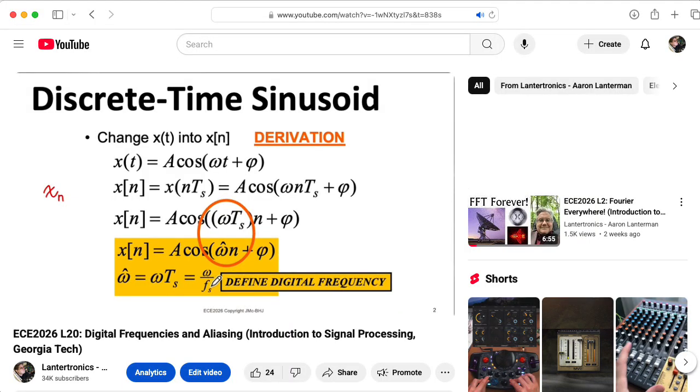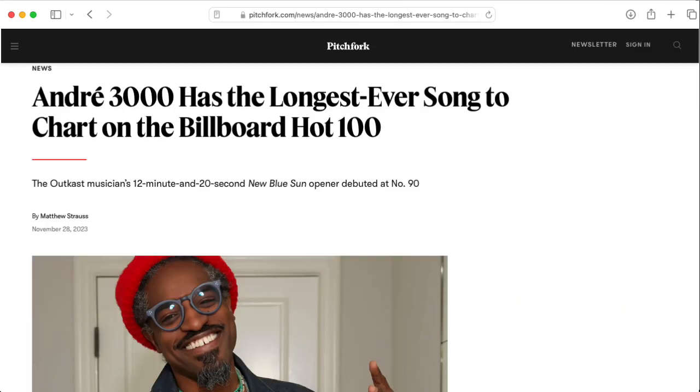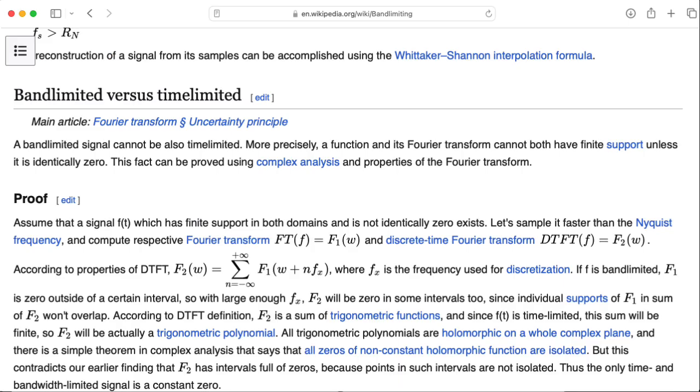And remember in the last couple of lectures we always talked about sinusoids that were conceptually happening for all time. Of course all the signals we might record or want to generate in real life have finite length. So technically speaking none of those are band limited. So any practical system has a little bit of aliasing going on, but we try to keep it to a minimum.